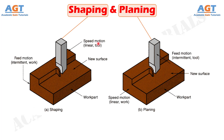Machining is basically one material removal process where excess material is sheared off by the mutual interaction between workpiece and cutting tool. Both shaping and planing are conventional machining operations that follow a subtractive manufacturing approach. Both utilize general purpose machine tools and single point cutting tool. Quick return mechanism is employed in both their machine tools; however, their point of application are different.